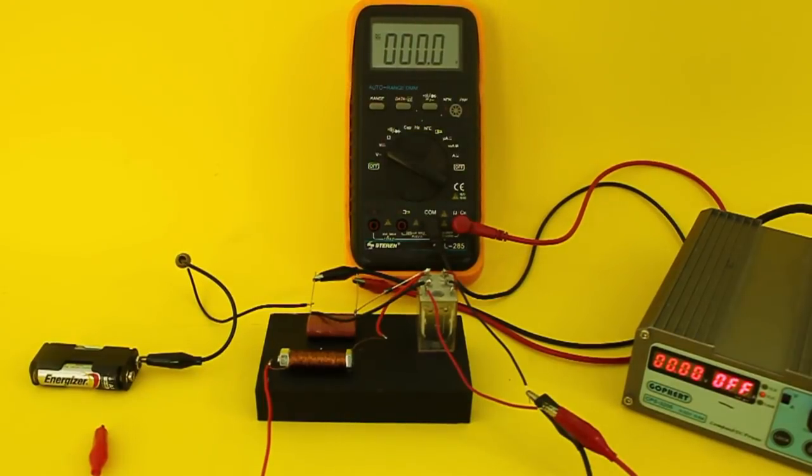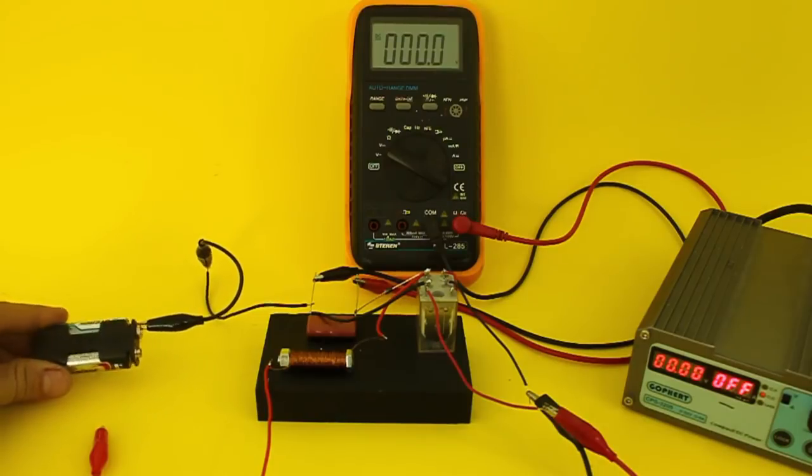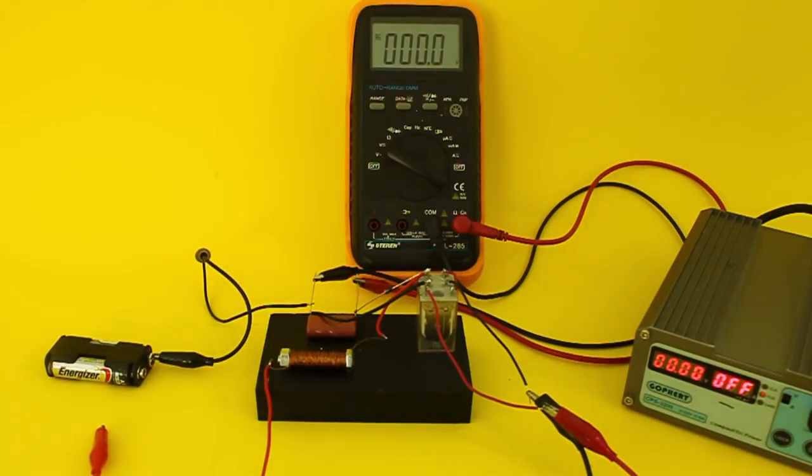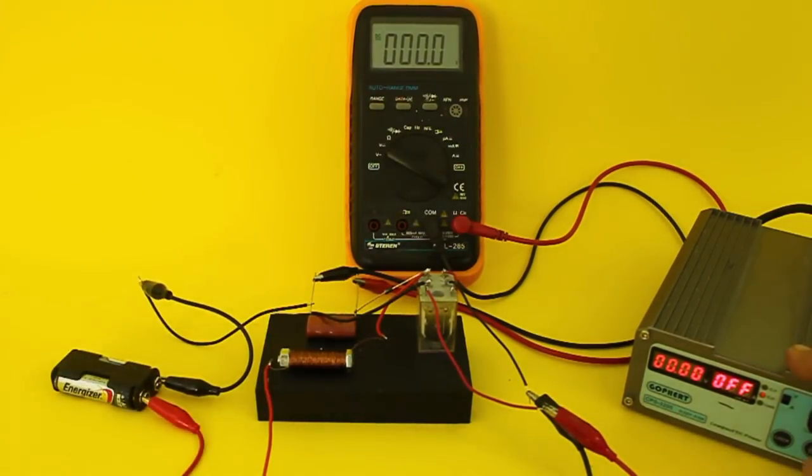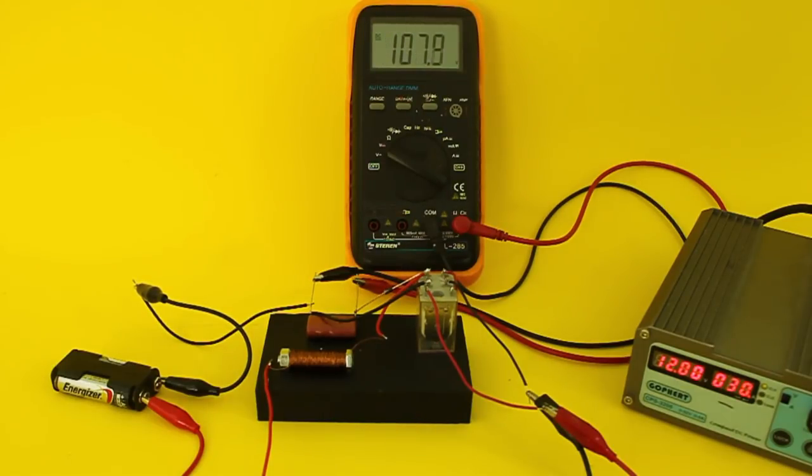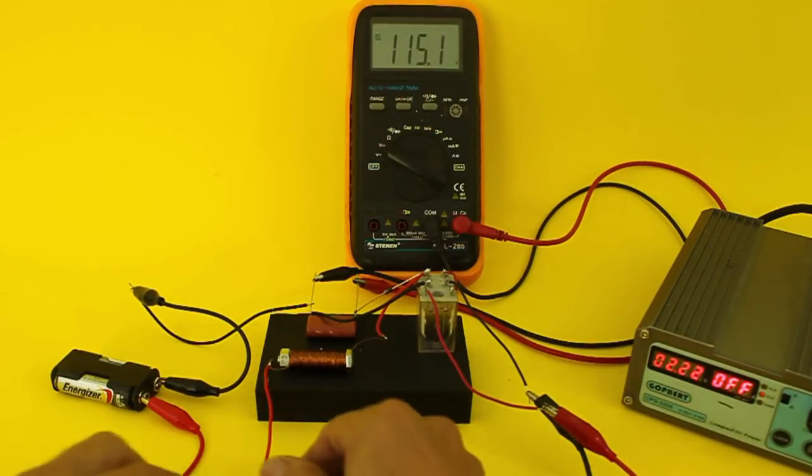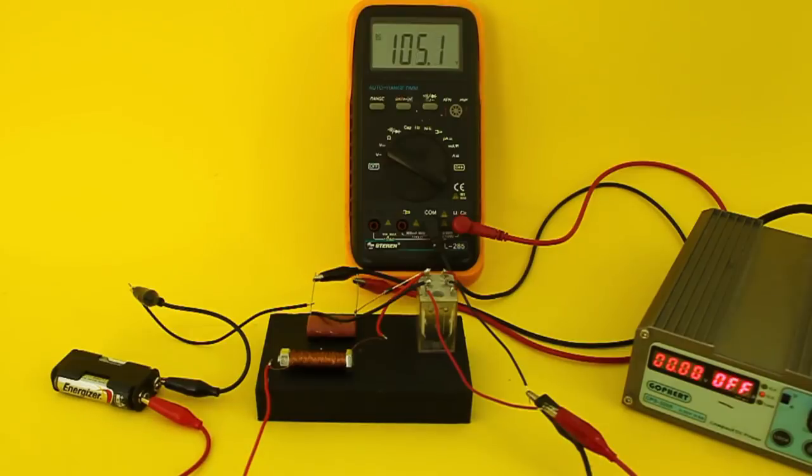Of course, the output voltage depends on the input. I will now use two AA batteries, that is 3V. And let's see what output voltage we get. Around 120V.